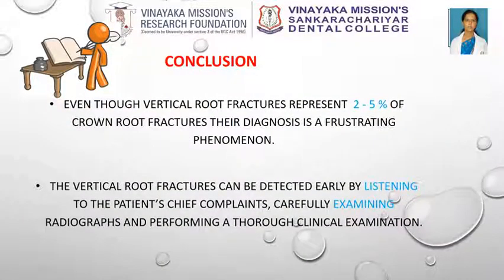Conclusion: even though vertical root fractures represent only a small portion — 2–5% of crown root fractures — their diagnosis is a frustrating phenomenon for both the clinician and the patient. Vertical root fractures can be detected early by listening to the patient's chief complaints, carefully examining the radiographs, and performing a thorough clinical examination.